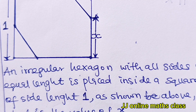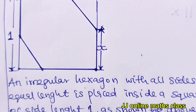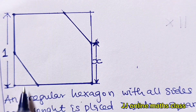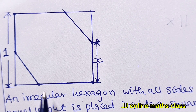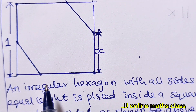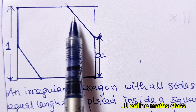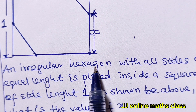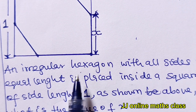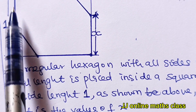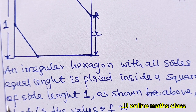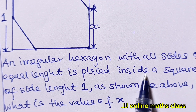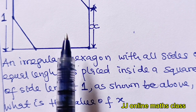Here we have an Oxford admission test. This is not drawn to scale — this is supposed to be a square of side one unit, and you'll have a hexagon. A hexagon is a polygon of six sides, so this is an irregular hexagon with all sides of equal length. That means each side is x. This hexagon is placed inside a square of side length one, as shown.